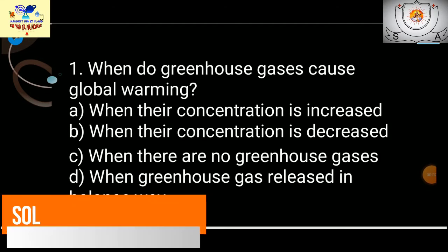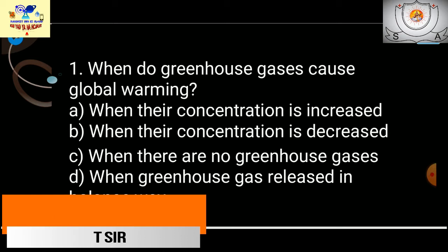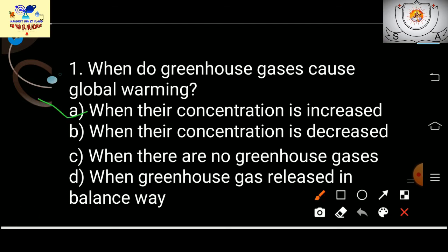Question Number 1: When do greenhouse gases cause global warming? The options are: when there are no greenhouse gases, when greenhouse gases increase, when their concentration is decreased, or when greenhouse gases have no benefits. The answer is: when their concentration is increased.